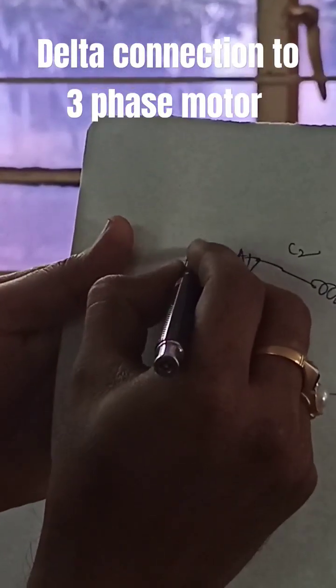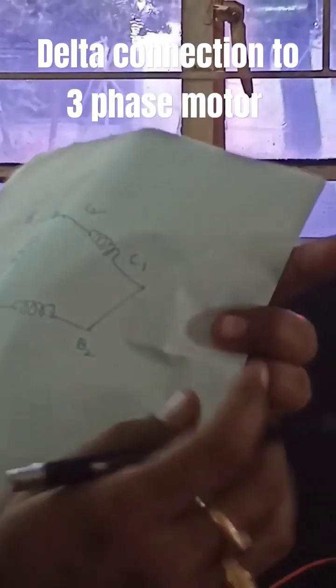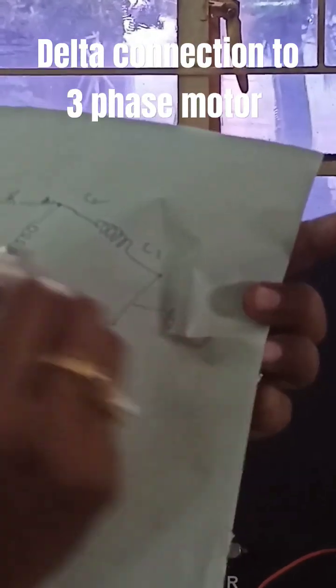So then you are going to get one resultant. From this resultant, from these two ends, we are going to give Y and from this resultant we are going to give B supply.